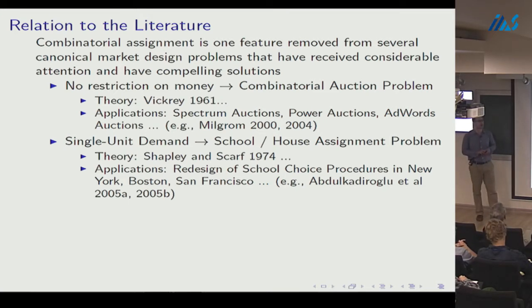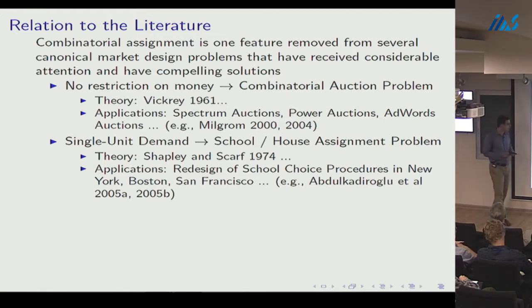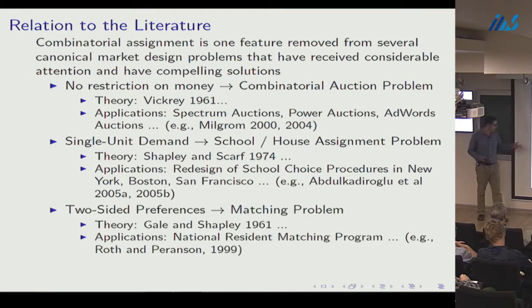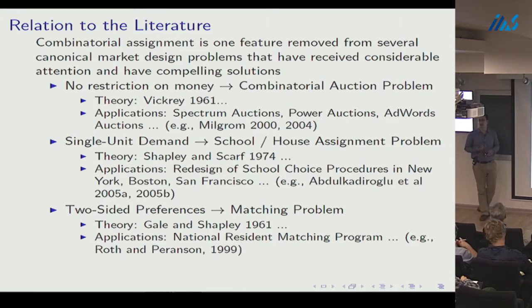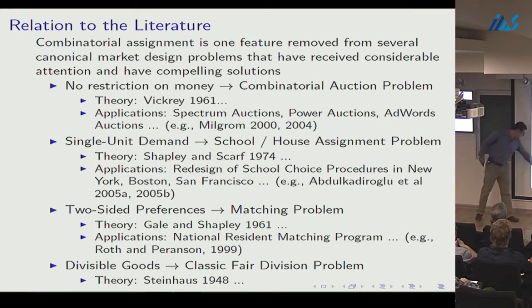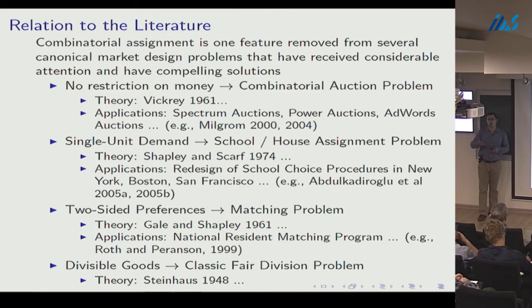The house allocation model has proved fruitful in thinking about school choice and dormitory assignment systems. If preferences were two-sided instead of one-sided, we'd have a matching problem — agents have preferences over objects but objects don't have preferences back. The theory for matching traces to Gale and Shapley with numerous successes in practice. The indivisibility of goods will play a key role in making the problem difficult.